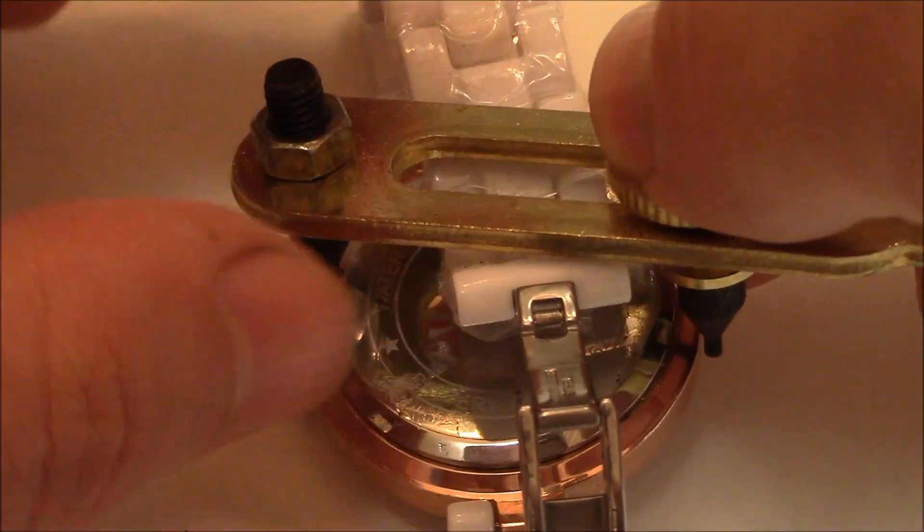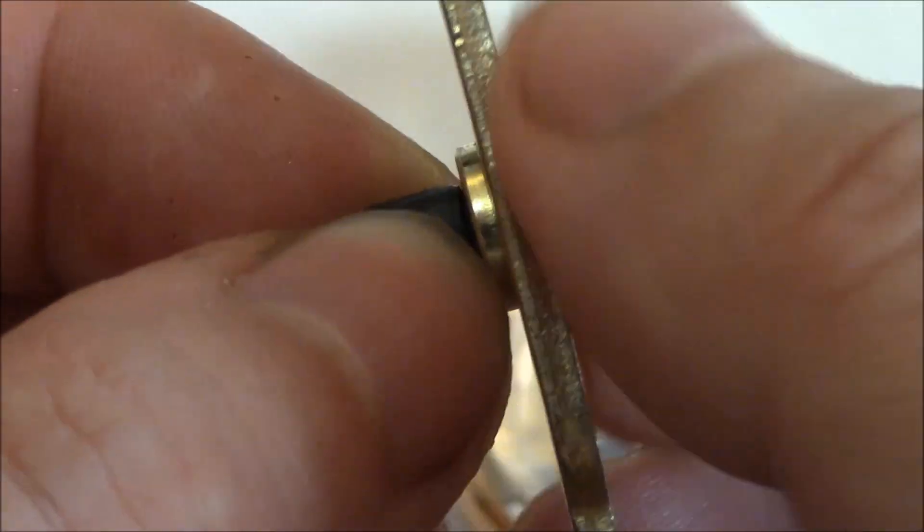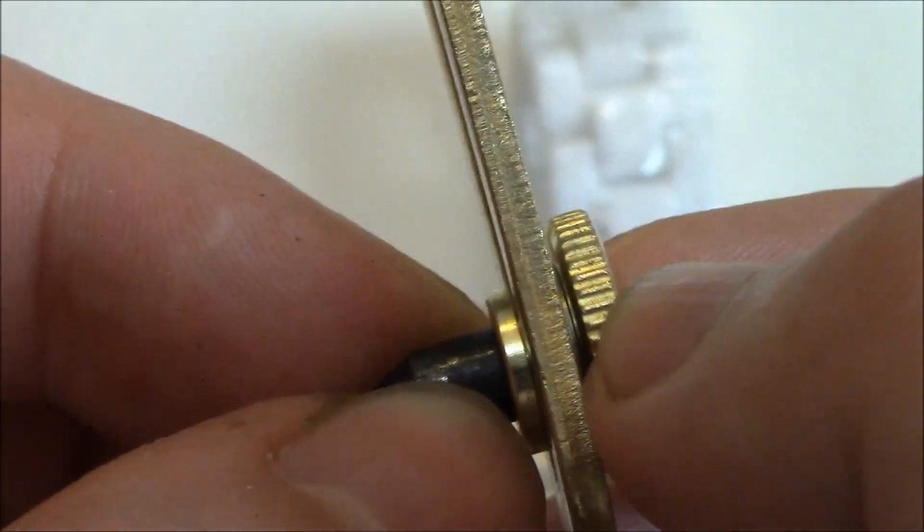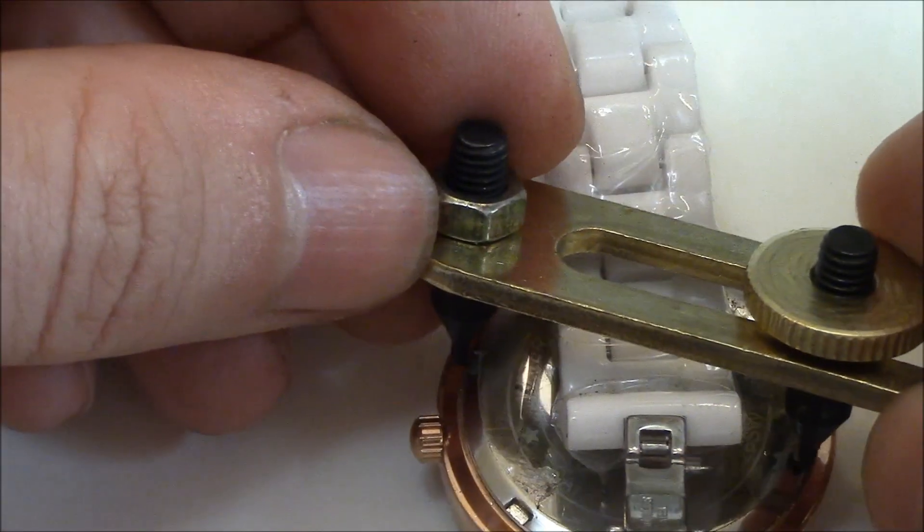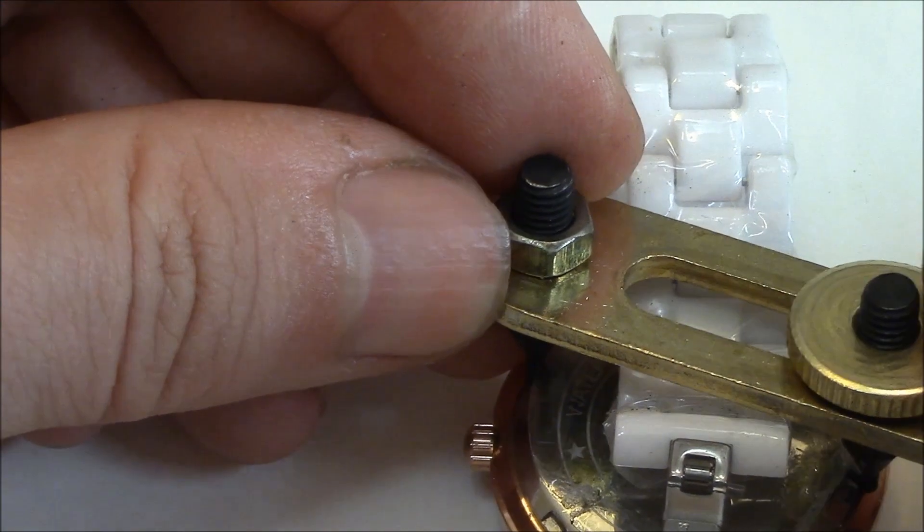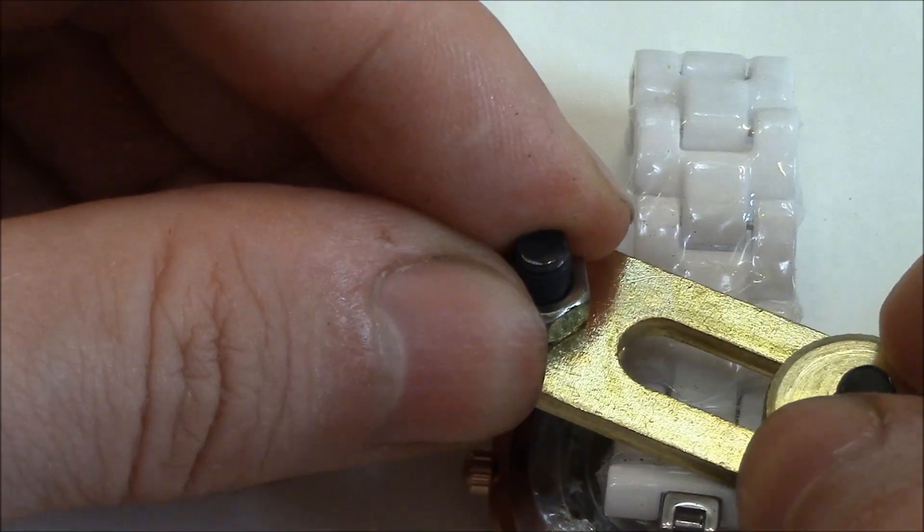So I'm going to get one side there and another side here. Let me get it to a point where it's almost tight, but not quite tight, so I could just move it along. This way I can secure it more easily. Now I can tighten it.